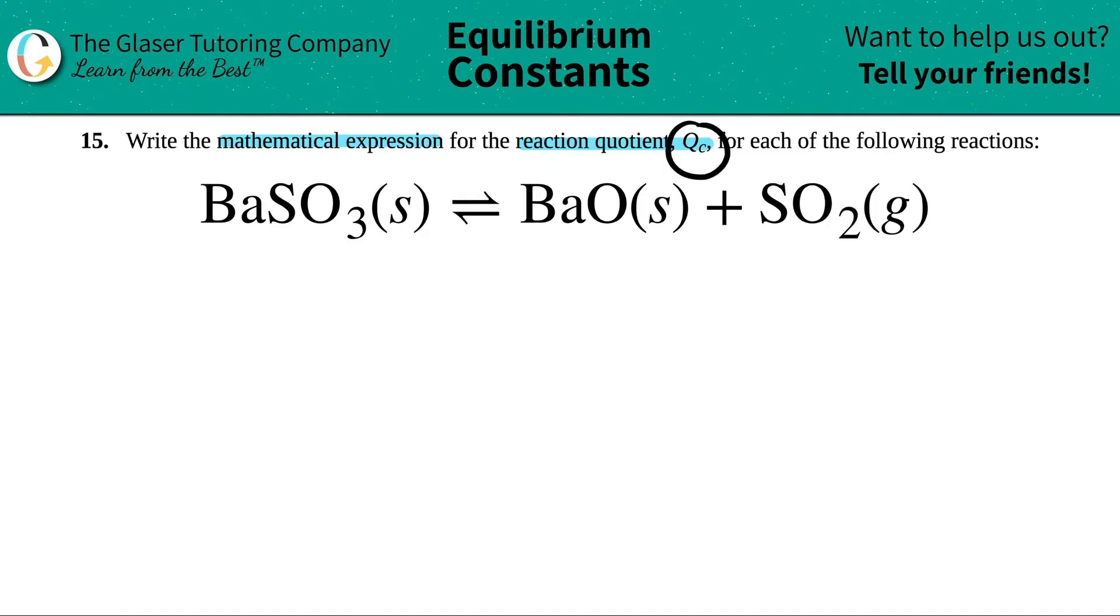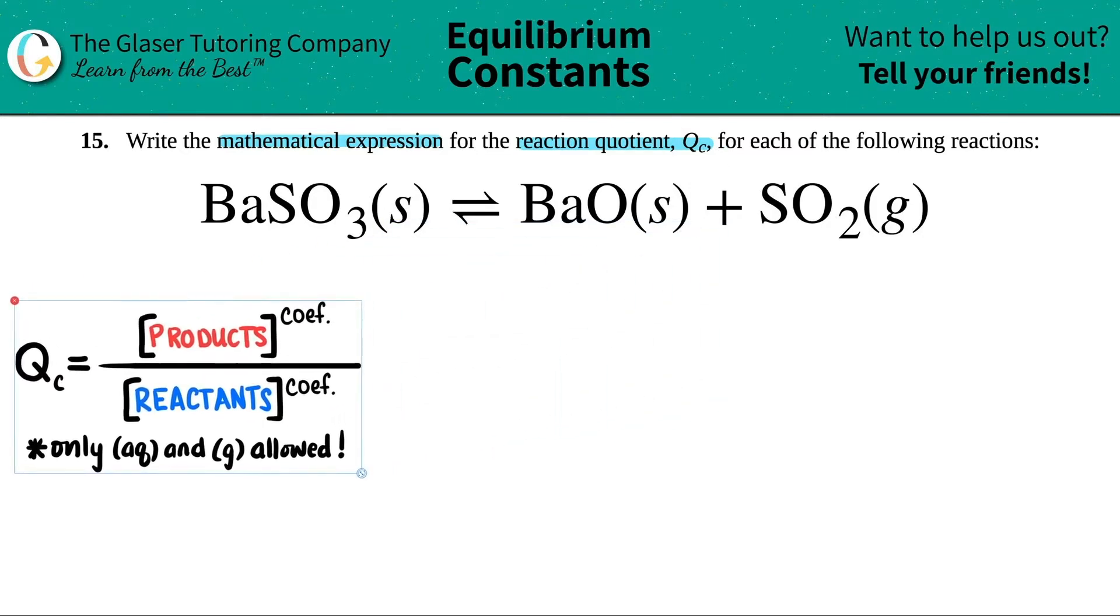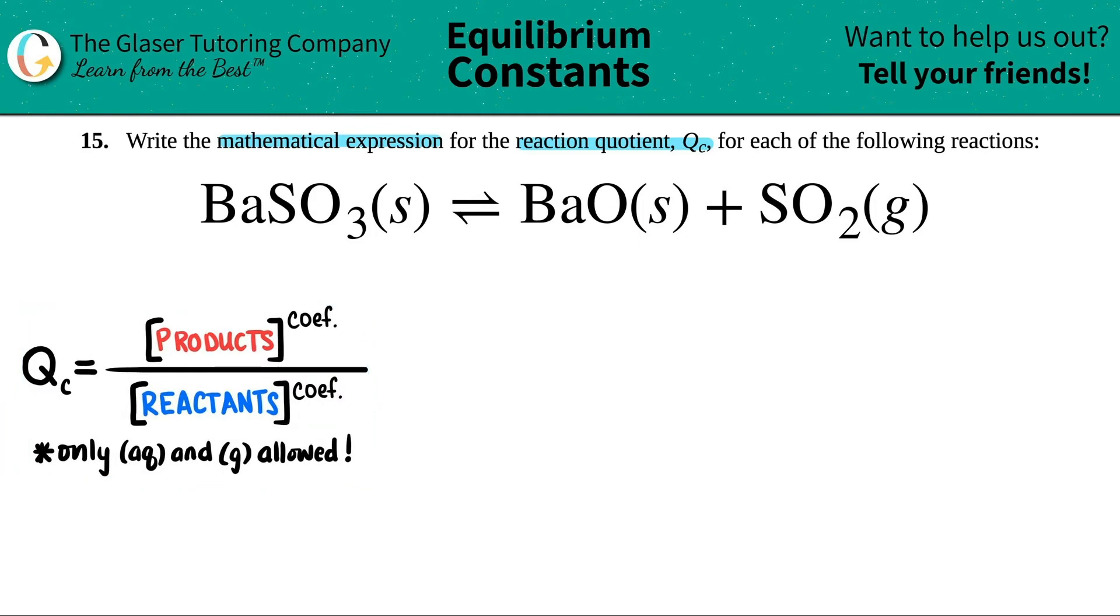Okay, so they want us to find the QC, the reaction quotient. There's a general formula for the QC, and that's this right here. I'm just going to put it over here. So QC just means that you're going to be taking the concentration of the products. That's why they're in brackets. Brackets are concentration numbers, aka molarity, and you're just going to divide them by the concentration of the reactants.